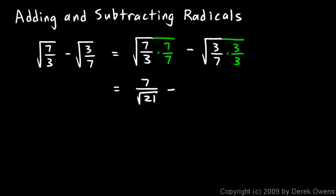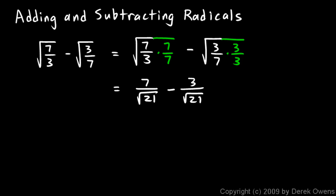Then I have a minus, and over here, the square root of 3 times 3 is just 3. And again, I have a square root of 21. So what I've done is get them both with the same denominator, and those can be combined. This ends up being 4 over the square root of 21 — so 7 over root 21 minus 3 over root 21 just ends up being 4 over the square root of 21.